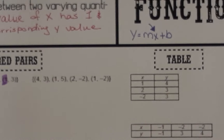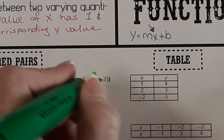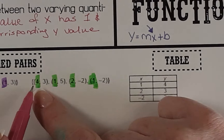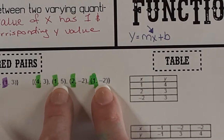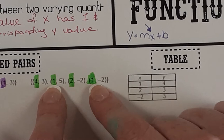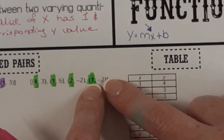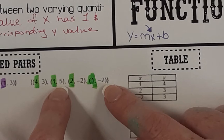Now let's look at this second example. Again, we're going to highlight our x values. When we look through these x values, we have an x value of 4, an x value of 1, an x value of 2, and another x value of 1. When you enter a 1 into y equals mx plus b, you'll get the value of 5. But if you enter the value of 1 again, you could also get negative 2. Because entering 1 gives you the possibility of receiving 2 separate answers, this is not a function.